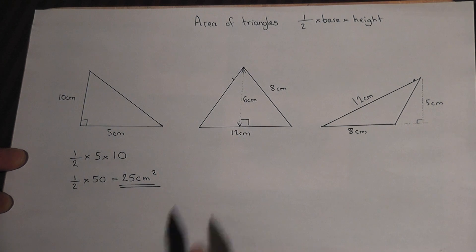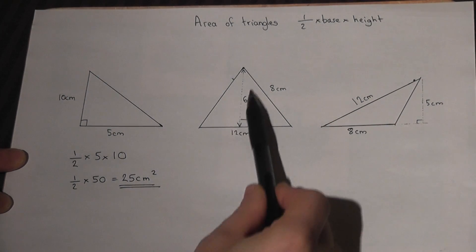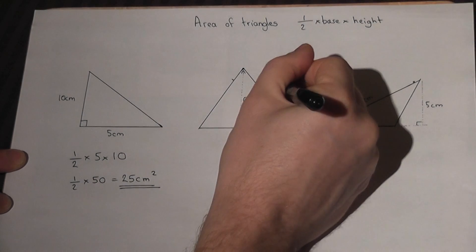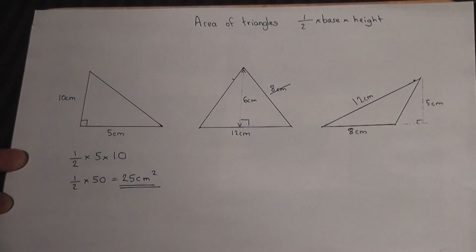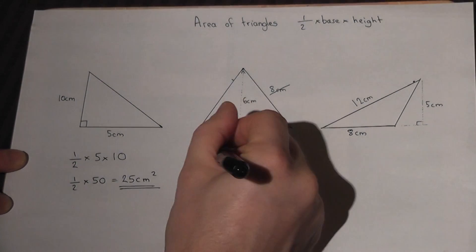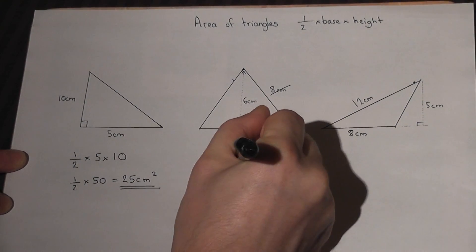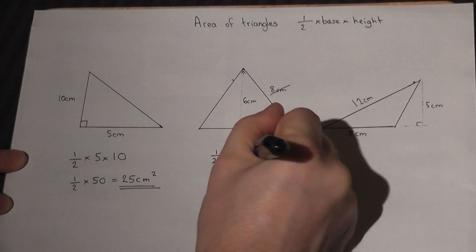Now in the second triangle, there are three measurements given. However, the key fact here is that height refers to the perpendicular height, not the slant height. The 8 is actually irrelevant to the calculation. So it's a half times base, which is 12, times height, which is 6.